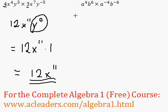And that's it. One more question over here. Now we have a to the 4, b to the 6, times a to the negative 4, b to the negative 6.